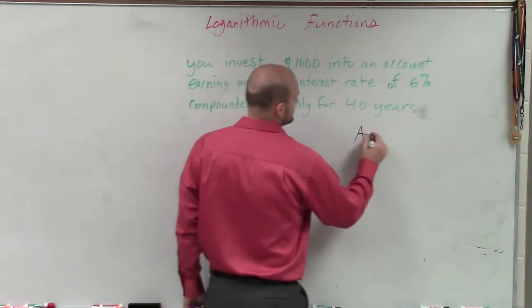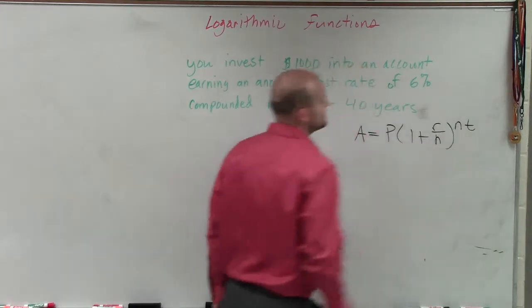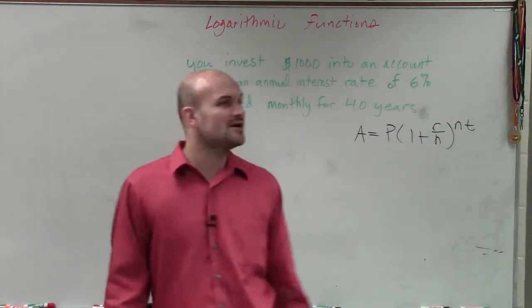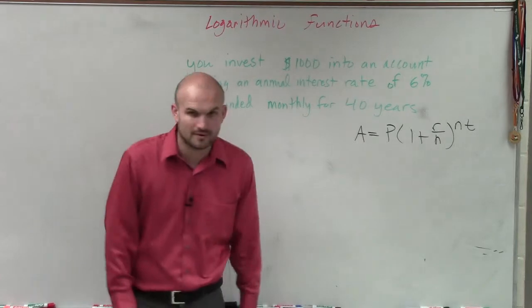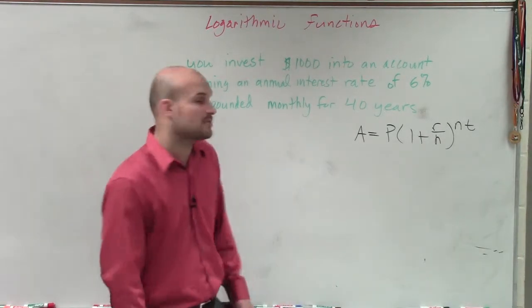So the formula we use looks like this: A equals P times 1 plus R over N raised to the N times T. And you're like, whoa, that's a lot of stuff to go through. All right? So you guys will have the formula, but you need to understand what exactly each part of the formula is.